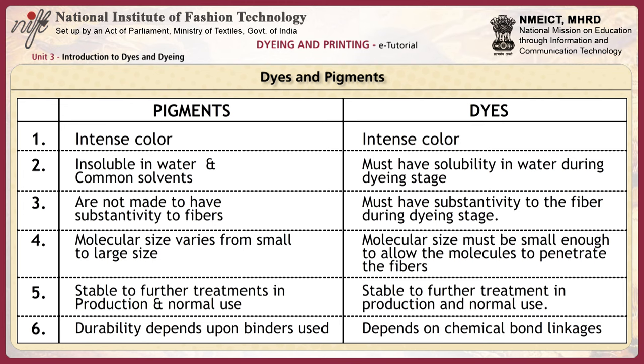Properties of dyes: Dyes have intense color. They must have solubility in water during the dyeing stage. Dyes must have substantivity to the fiber during the dyeing stage. The molecular size of the dye must be small enough to allow the dye molecule to penetrate the molecular structure of the fiber. They are stable to further treatment in production and normal use. The durability of dye depends on what kind of chemical bond forms between the dye molecule and the fiber molecular structure.